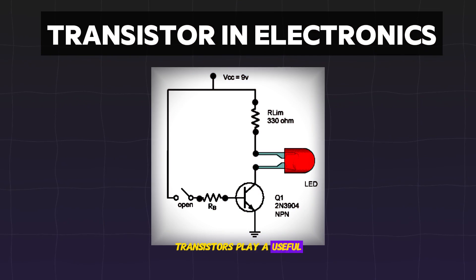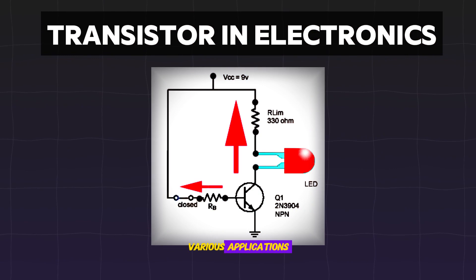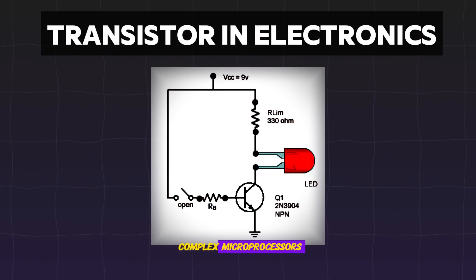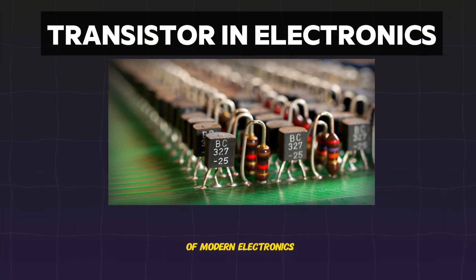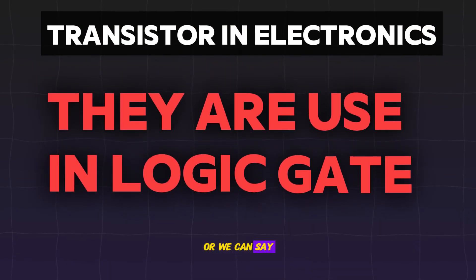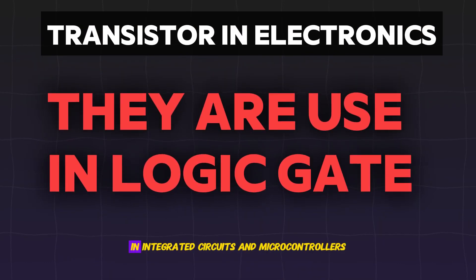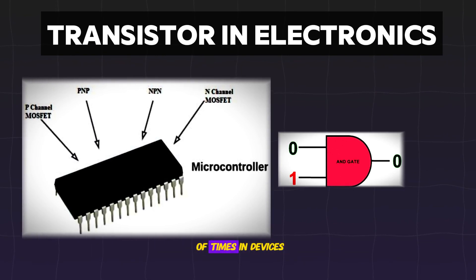Transistors play a useful role in modern electronics. Various transistors are used in various applications, from simple amplifiers to complex microprocessors. They are fundamental components of modern electronics used in devices like smartphones and computers, or in logic gates in integrated circuits and microcontrollers. They are used billions of times in devices we use today.